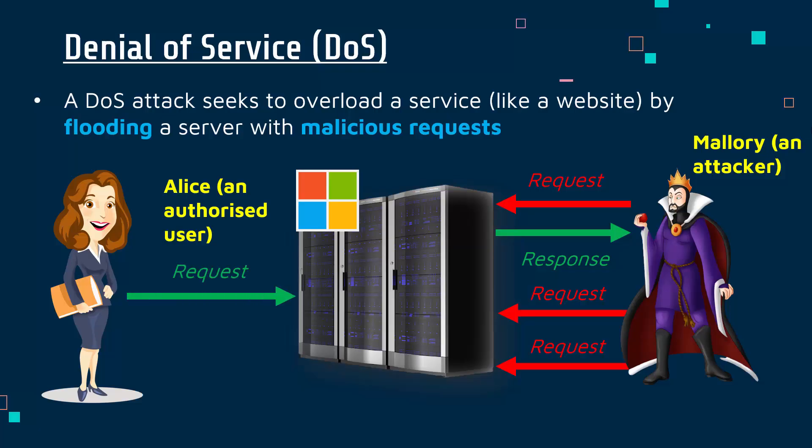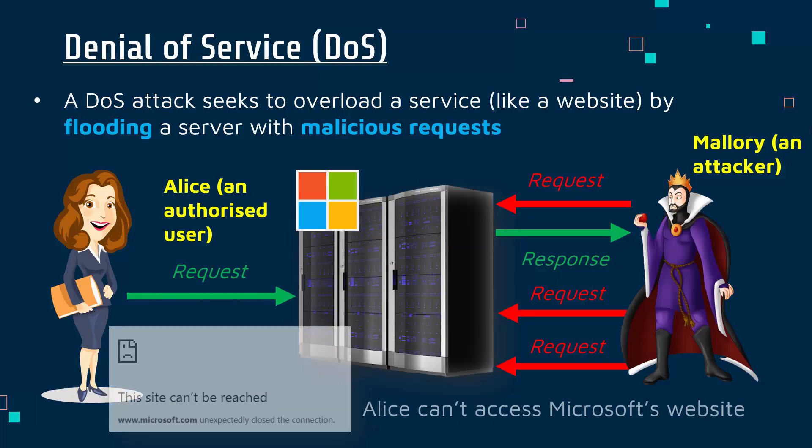So Alice might request it again, and this time she might get a response saying she can't have it, or possibly even no response, just because Microsoft's servers are overwhelmed because of this denial-of-service attack. The consequence for Microsoft or the company being affected is they're not able to function normally — it disrupts their operation, denies service to their legitimate users, so they can't make money, and causes inconvenience and issues for the organisation.